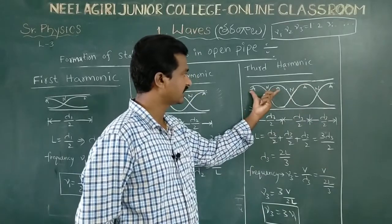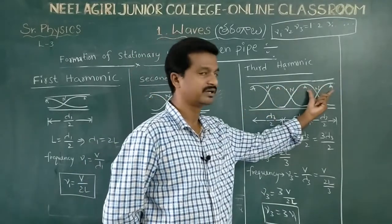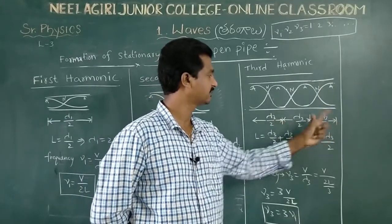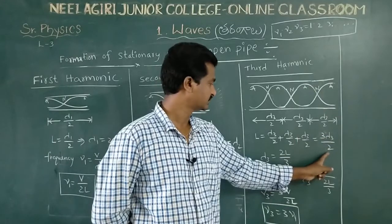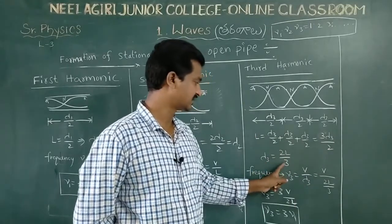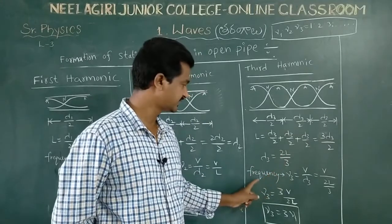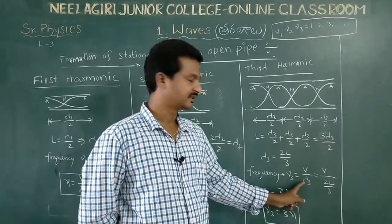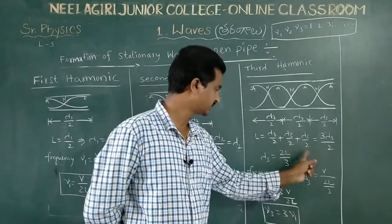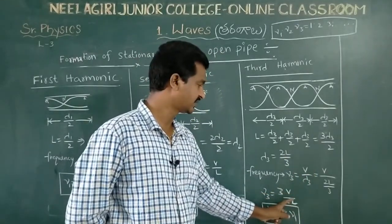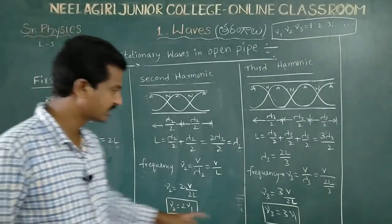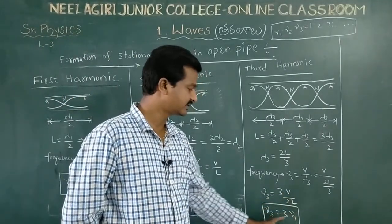The total length is L = λ₃/2 + λ₃/2 + λ₃/2 = 3λ₃/2, so λ₃ = 2L/3. The frequency ν₃ = V/λ₃ = V/(2L/3) = 3V/2L. Since V/2L = ν₁, we have ν₃ = 3ν₁.